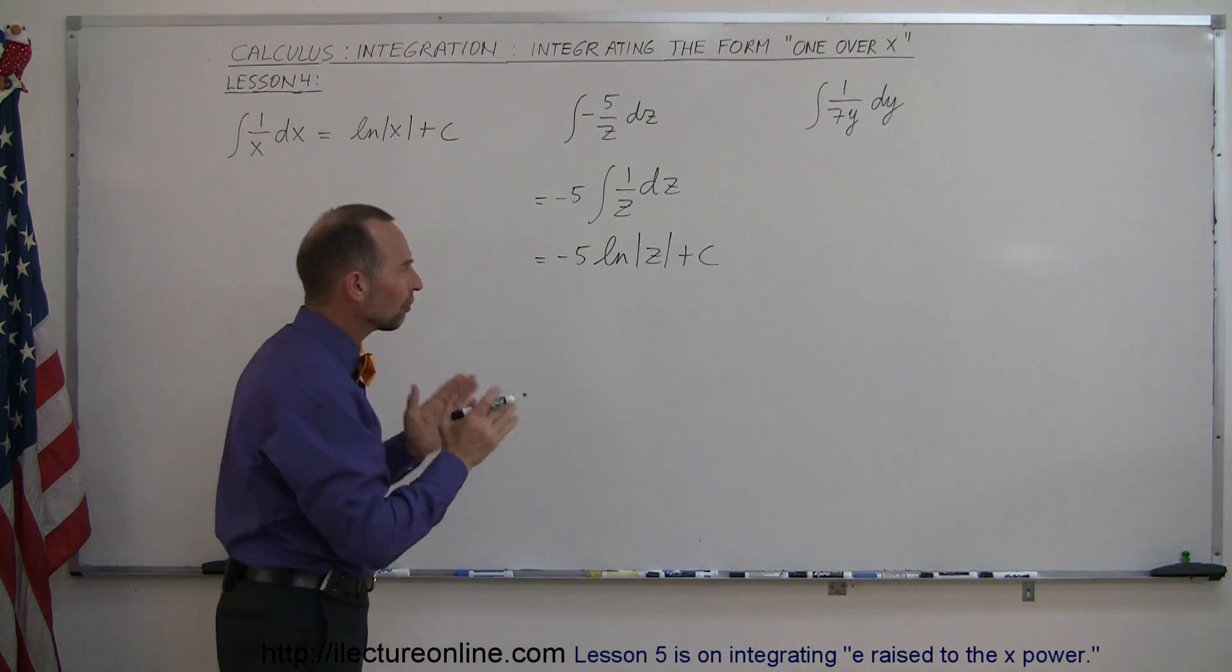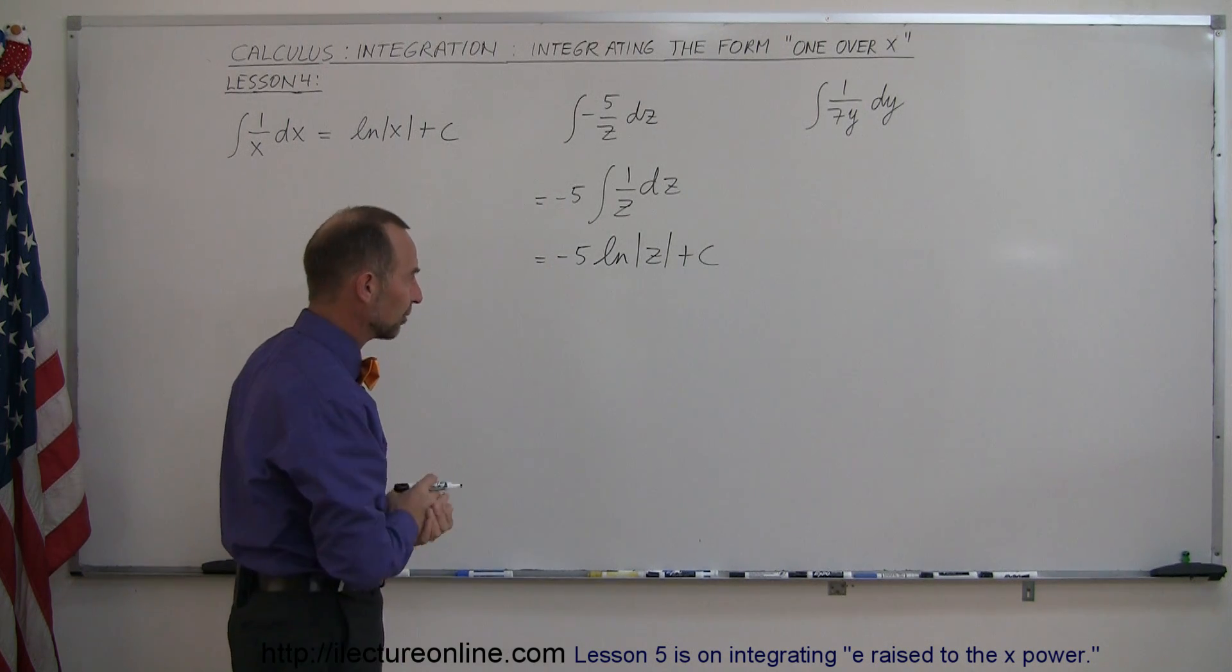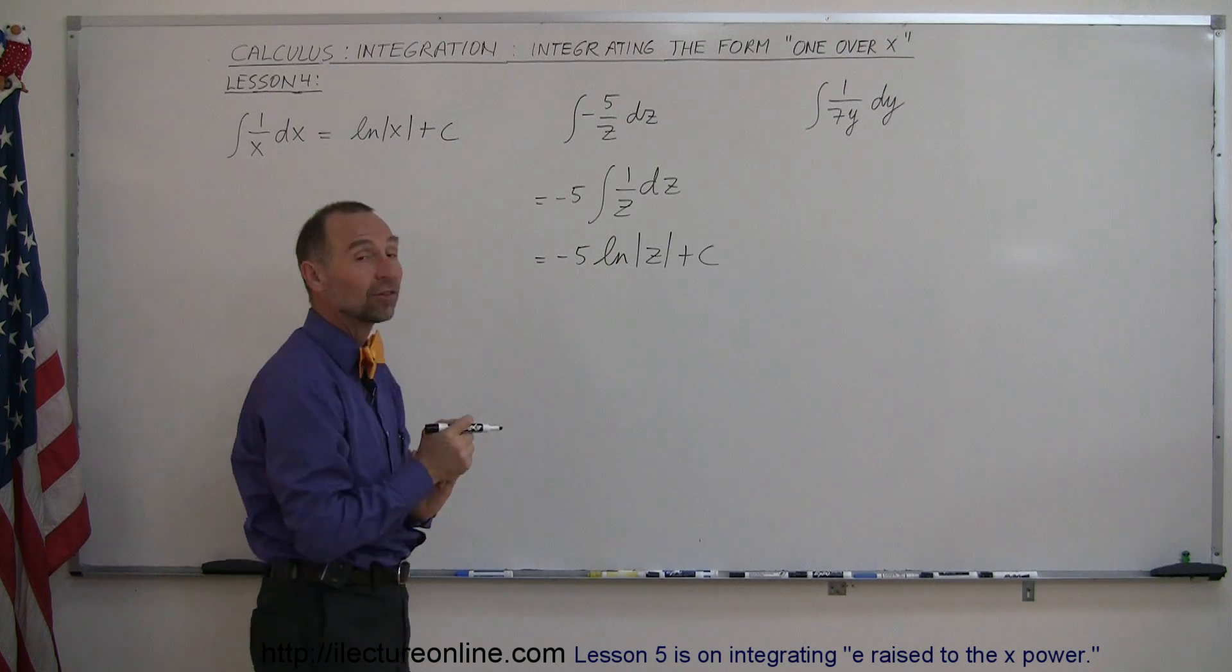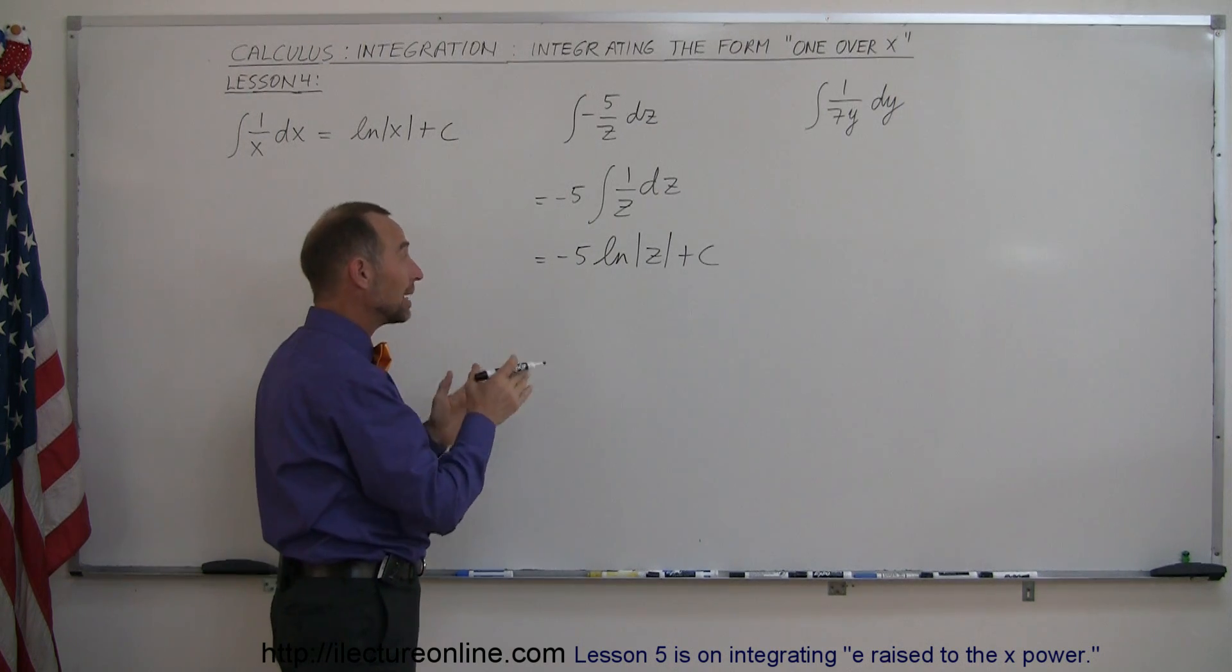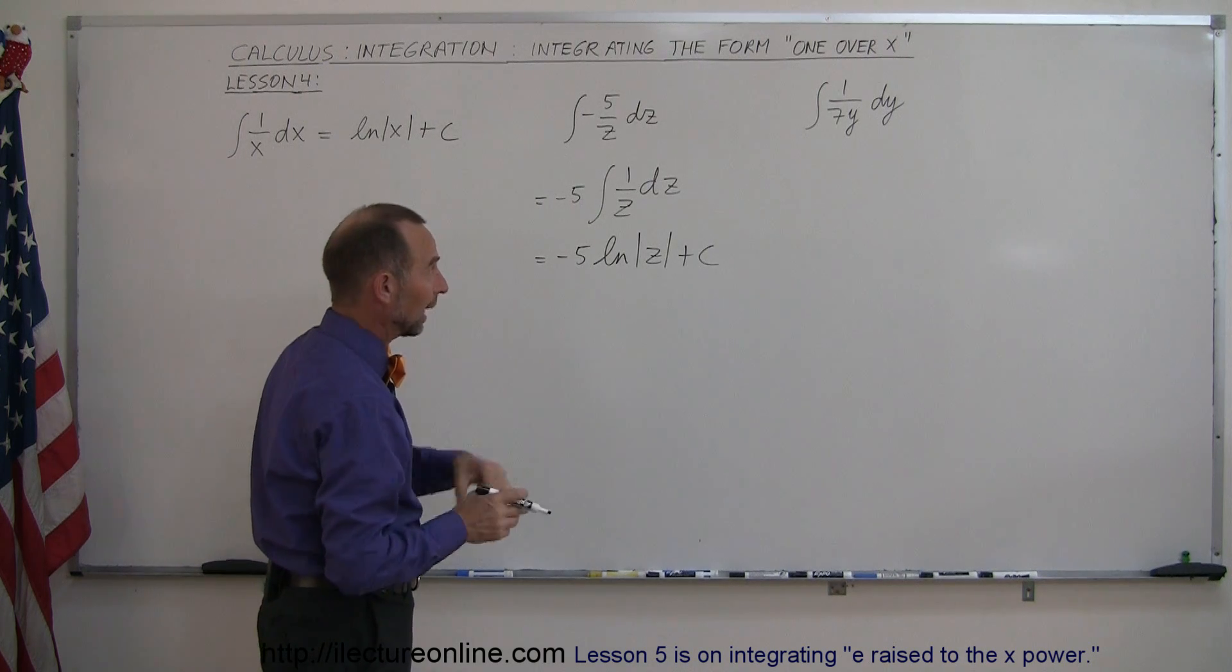Notice that I put absolute value signs around z, just like I did here, because of course we cannot take the natural log of a negative number. So that's why we safeguard ourselves and say it can only be the positive value of whatever that number is. And then here,